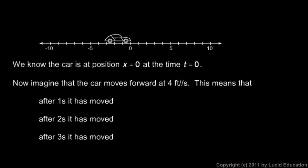So here's a picture. Here's the car. The front bumper is right there at position 0, and we're saying that that's when we start the stopwatch at t equals 0. So it's at that position at that time, and it's moving forward at 4 feet per second.